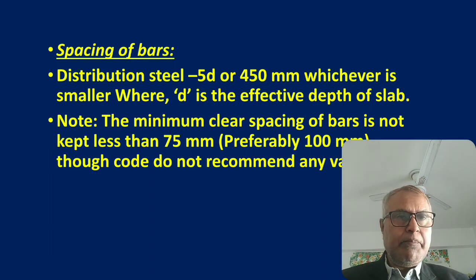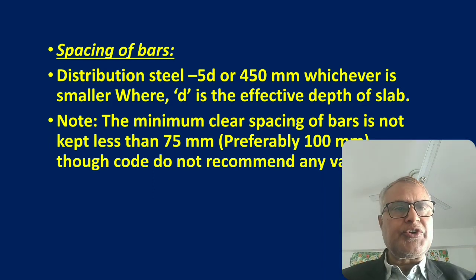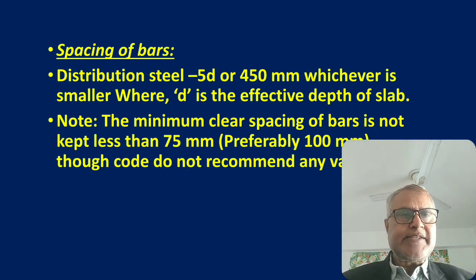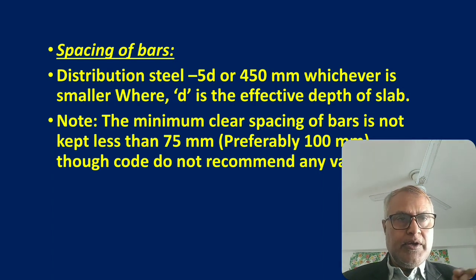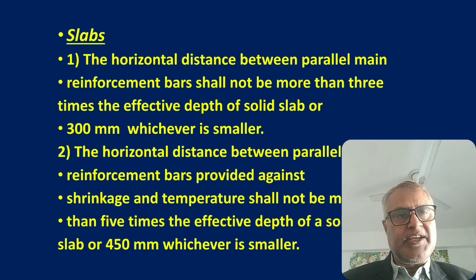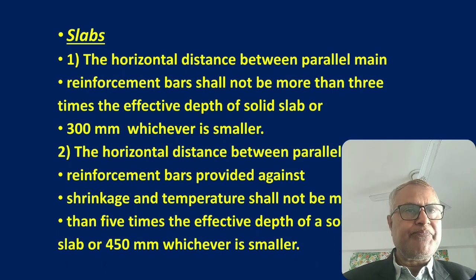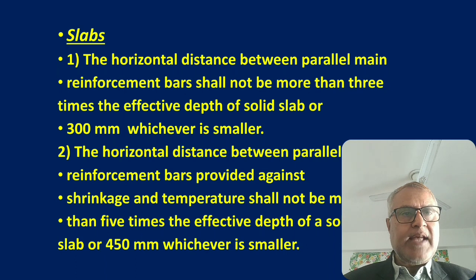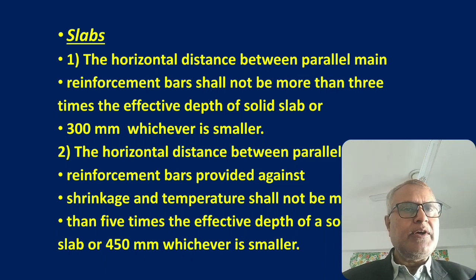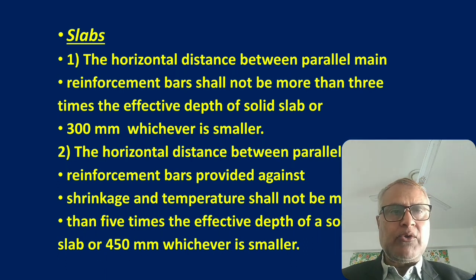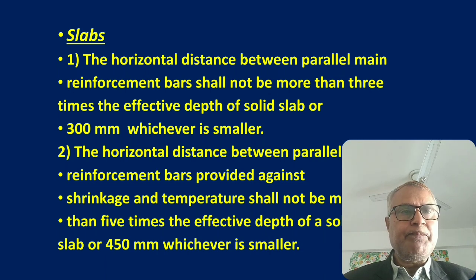Also note that in the slab, the minimum clear spacing of the bar shall not be less than 75 mm. The horizontal distance between parallel main reinforcement bars shall not be more than three times the effective depth of the solid slab, or 300 mm, whichever is smaller. Calculate both 3D and 300 mm and use the lesser value as the distance between two parallel main bars.